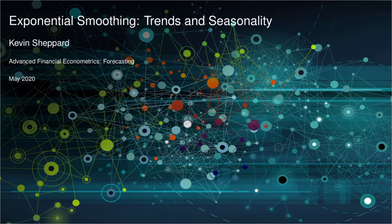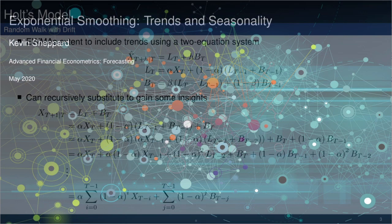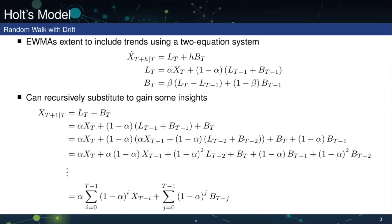Next, we're going to see how we can extend simple exponential smoothing to include both trends and seasonal components. Holt's model, which is also known as double exponential smoothing, adds a trend component to the standard SES model. Rather than use a single equation, Holt's model evolves using two equations.